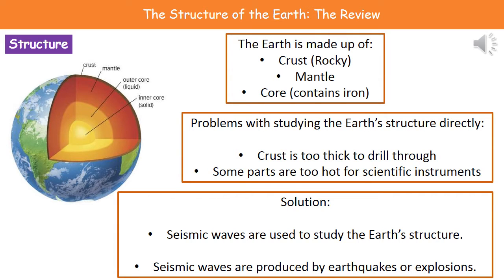There are four main parts that we should remember, and you can see those in the diagram on the left hand side. The very outermost part is the crust. Inside that we've got the mantle. Then we've got the core, which is made out of the outer core, which is a liquid, and the inner core, which is a solid.